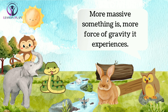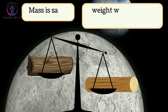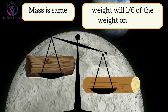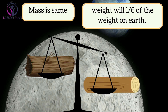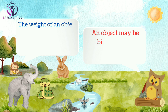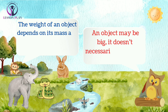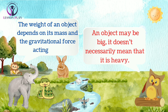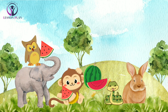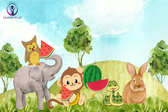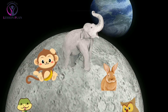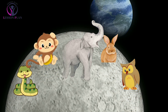The animals nodded in agreement and the owl continued. "Now, let's say we take these two objects to the moon. The weight of both objects will be less on the moon because the gravitational force on the moon is much less than that on the earth. However, the mass of both objects will remain the same because the amount of matter in them hasn't changed." They realized that even though an object may be big, it doesn't necessarily mean that it is heavy — the weight of an object depends on its mass and the gravitational force acting on it. So they decided to roll the watermelon back to their jungle and they all enjoyed the delicious fruit together. They also realized that if they ever got to go to the moon, they could jump really high because the weaker gravity would make them weigh less.